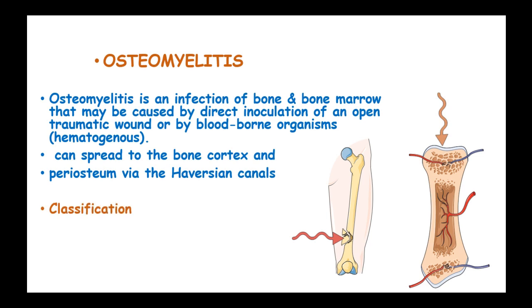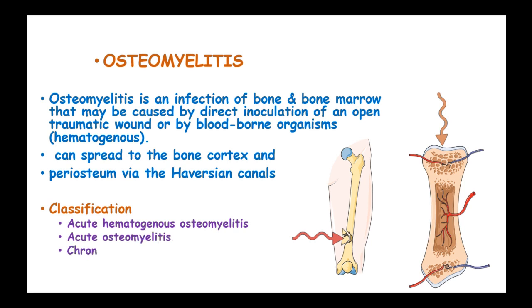Osteomyelitis can be classified into four classes: acute hematogenous osteomyelitis, acute osteomyelitis, chronic osteomyelitis, and subacute osteomyelitis.